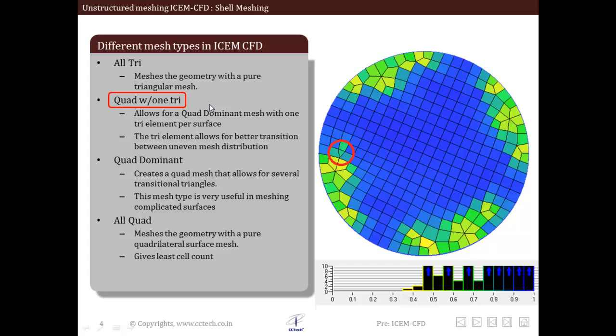Next is quad with one tri element, which means for one surface mostly all elements will be quad but one element can be tri. This is usually used in case of complicated surfaces where that one triangular element can make a smooth transition between uneven mesh distribution. So one triangular element is allowed in a set of quadrilateral elements on the surface.